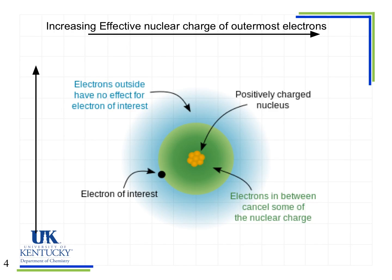Here is our first periodic trend. I want to point out a couple of things: I've got an arrow pointing up and to the right, and we'll have several periodic trends — I'll keep adding to this graph so you can see which ones are alike. We'll either have trends going up and to the right, or down and to the left. Also, I always express these in terms of increasing effective nuclear charge. Some diagrams in the book show one increasing and one decreasing, but I'd rather learn them all the same way. Effective nuclear charge applies to the outermost electrons — those in the highest energy level.